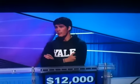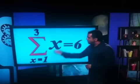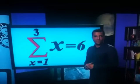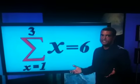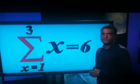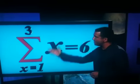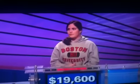Math for $4,000. Here's Jimmy. The big E is actually the Greek letter sigma. In math, it means to do this to a series of terms — here, from one to three. Erin. What is sum them? Sum them or add them. You are right.